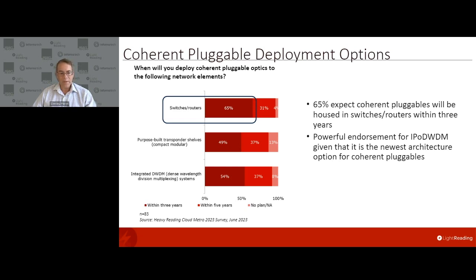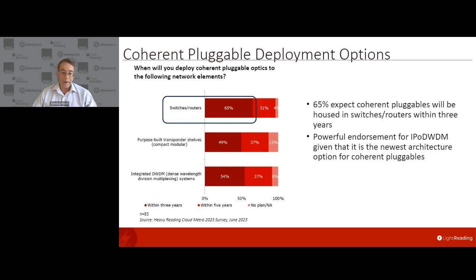65% of telecom operators intend — within the next three years — to deploy coherent pluggables in switches and routers. It's an amazing statistic and a very powerful endorsement for IP over DWDM, given that of all the options listed on the chart, this is the newest and most radical architecture. This is where operators really want to deploy the pluggables, and that's going to be the focus of today's webinar.